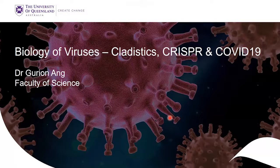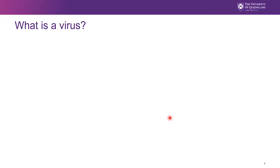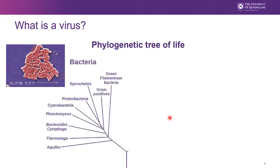Before we talk about the biology of viruses, let's clarify exactly what a virus is. We might consider where it sits in the phylogenetic tree of life. Phylogenetics allows us to organize all living organisms in a meaningful way, grouping them into biologically meaningful categories. Traditionally, before we understood genetics and DNA, we organized organisms based on their shape and form — the physical characteristics that we see.